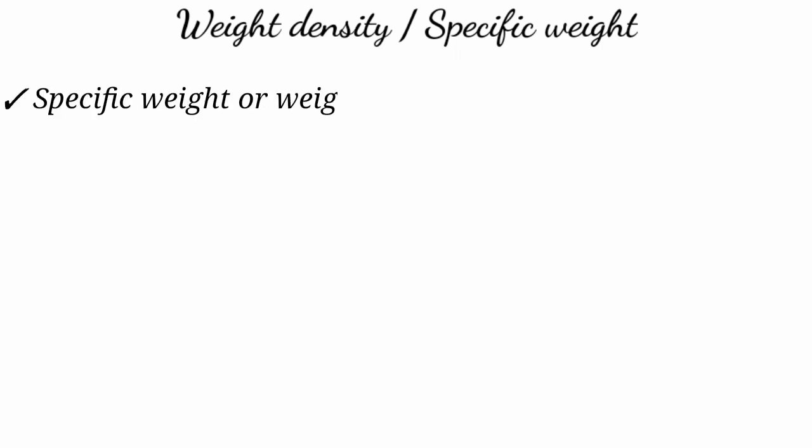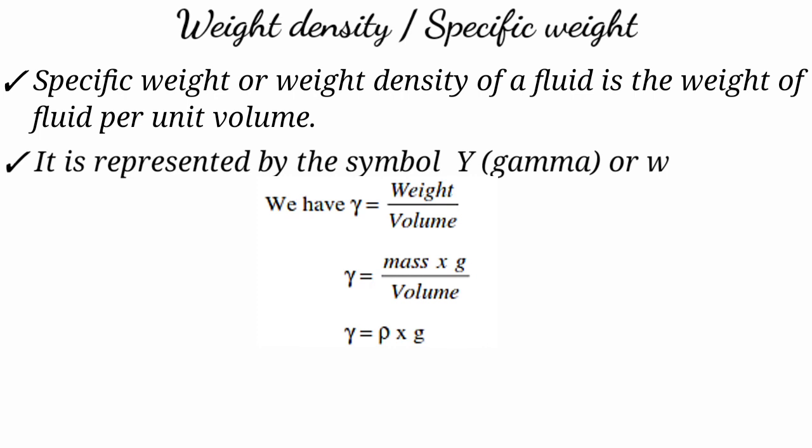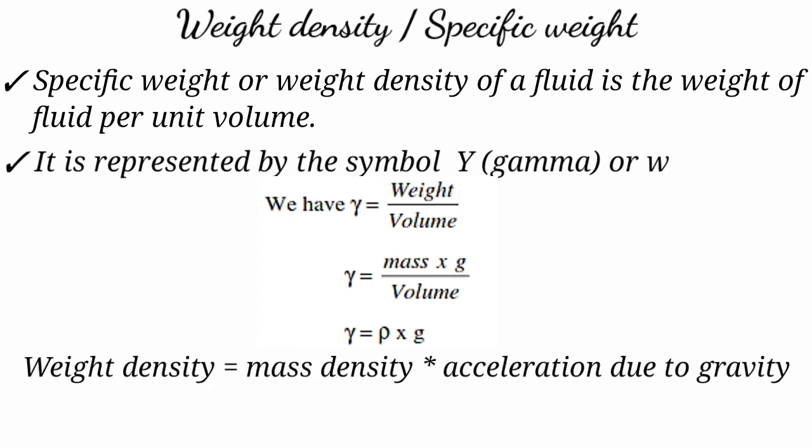The next property is weight density, also called specific weight. Weight density is the ratio of weight of a fluid to its volume. Weight density (γ) = weight / volume. Since weight W = mass × g, we have γ = (m × g) / V = ρ × g. So weight density equals mass density into acceleration due to gravity.